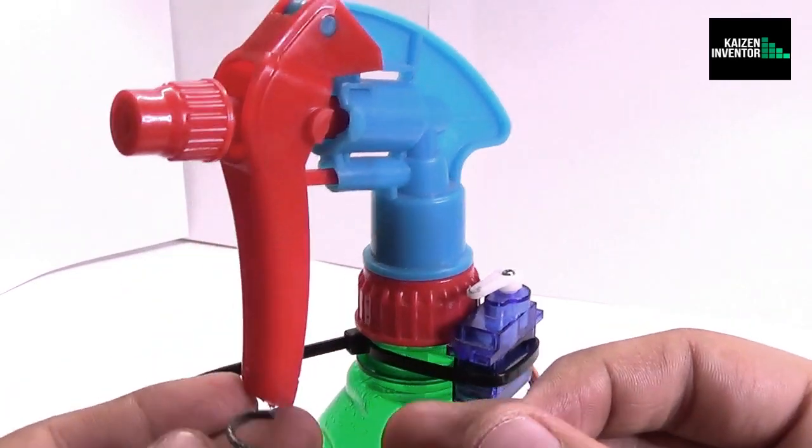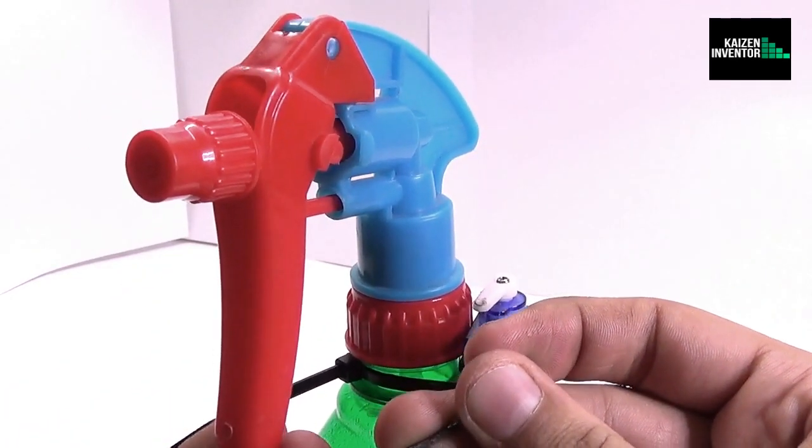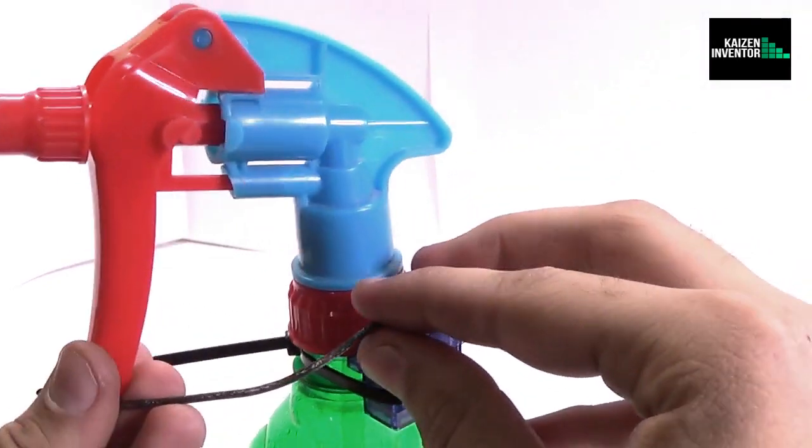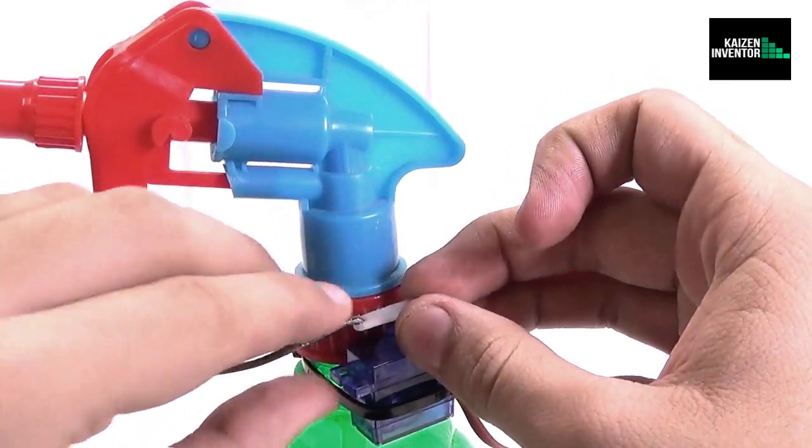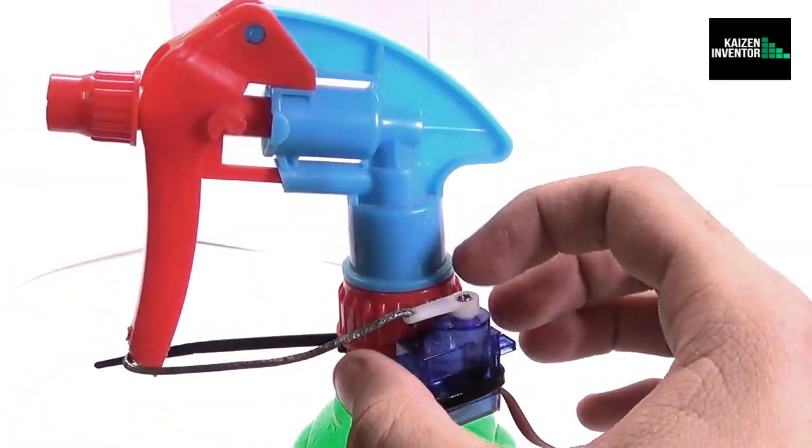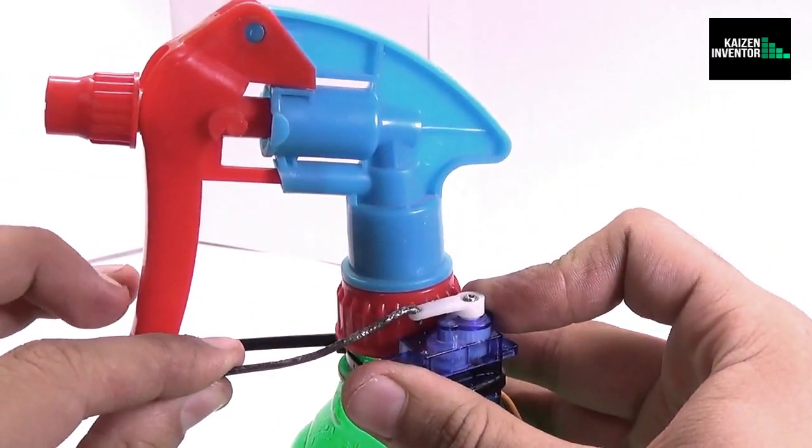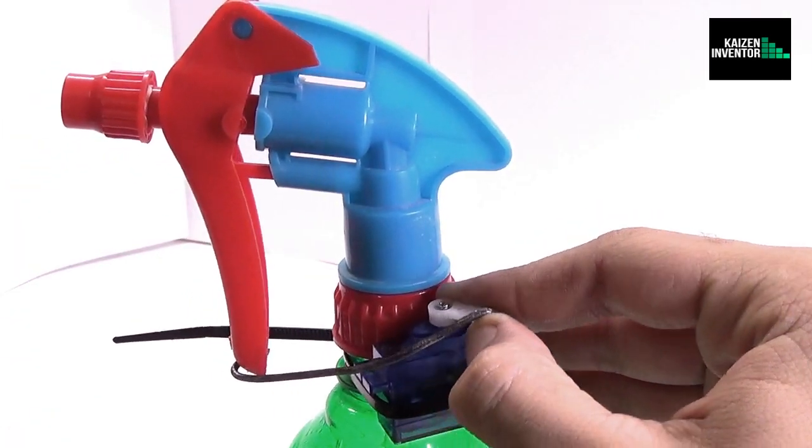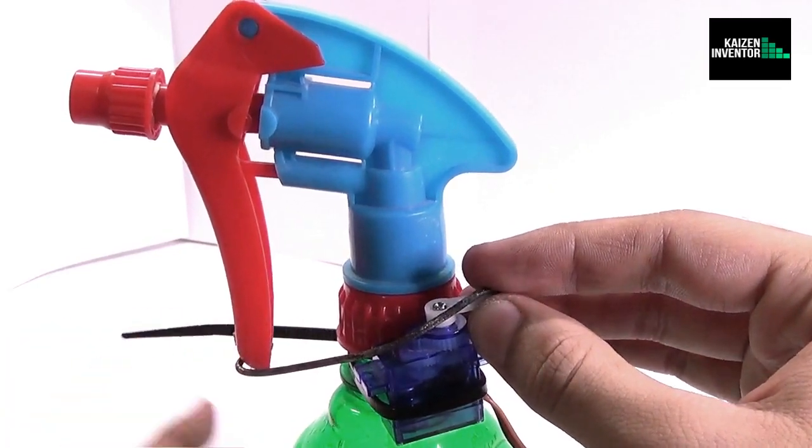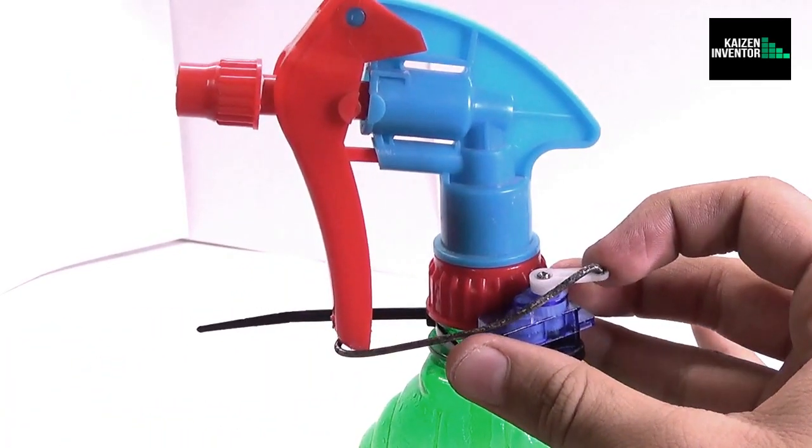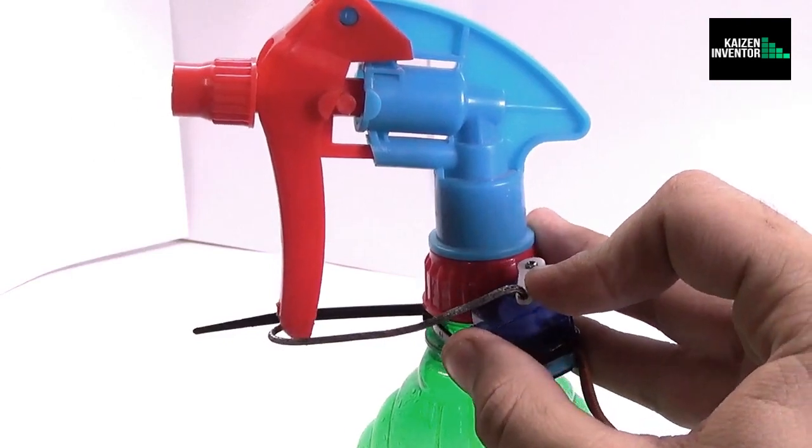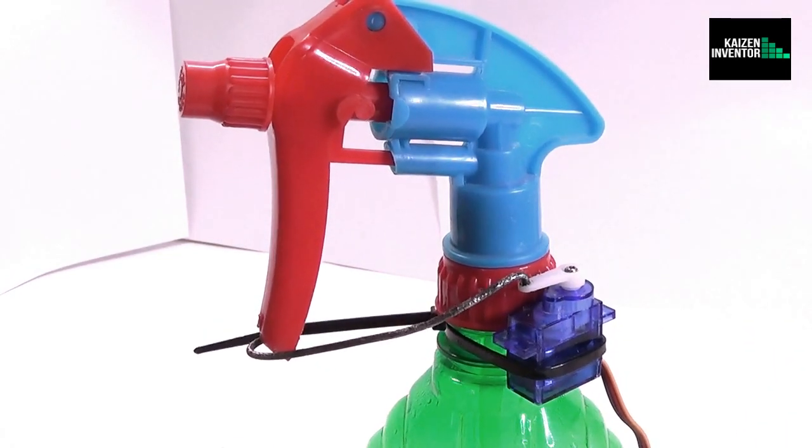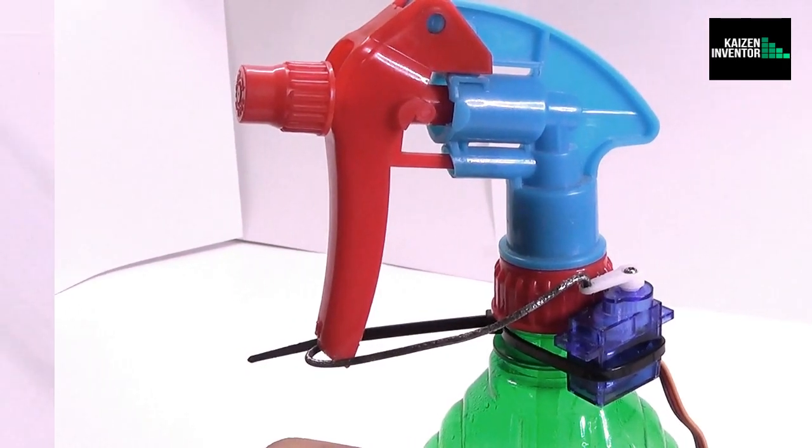So this hook would go in one of the holes of the sprayer and the other part would fit into the servo's arm. Now these are designed so that when the servo moves it would pull the sprayer's arm and whenever the servo moves back to its position it would push the sprayer's arm, creating the action of pumping and hence the water would spray out from the sprayer.